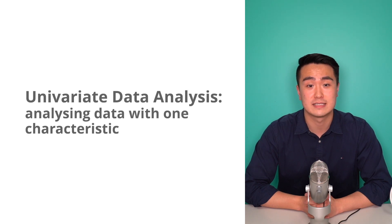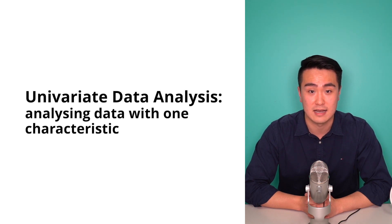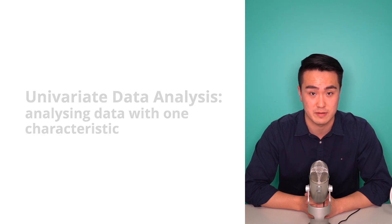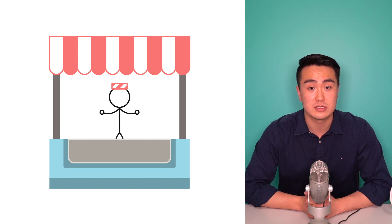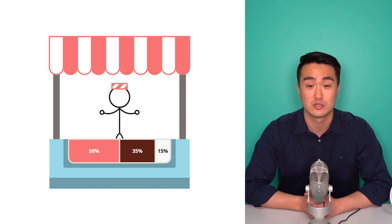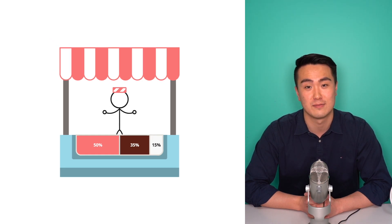So essentially, univariate data analysis is analysing data that contains one characteristic and drawing useful conclusions from them. Going back to the same example, the survey of people's favourite ice cream flavour is merely just a bunch of words and numbers by itself. We want to deduce and make adequate conclusions about the data, for example selling more strawberry ice cream because it was the most popular from the data and obviously it's the best flavour.